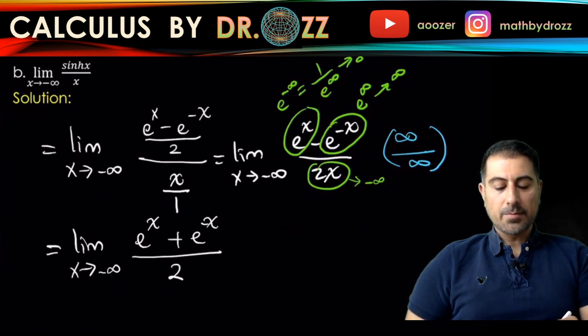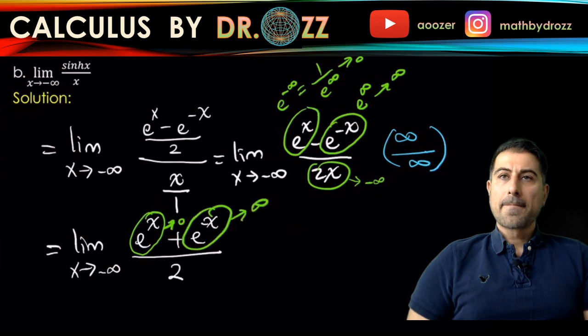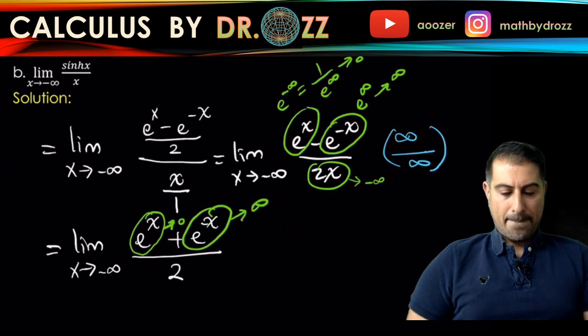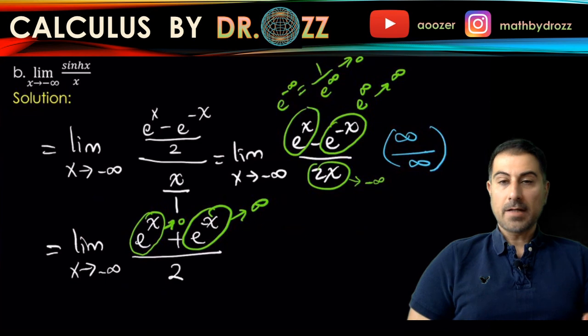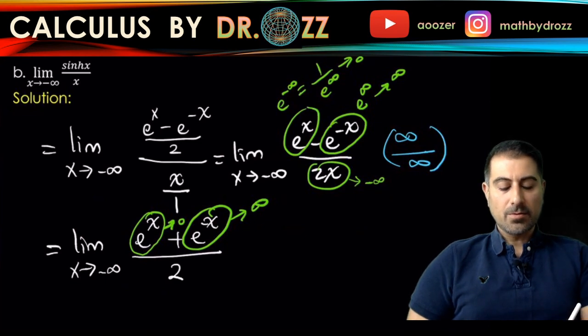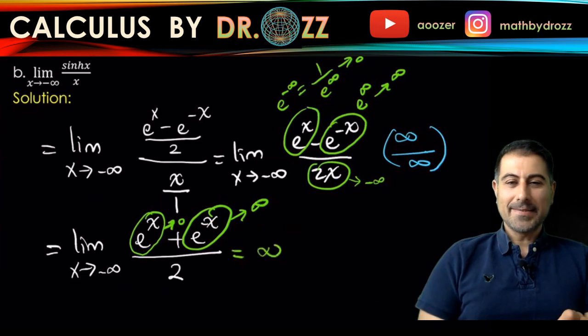By using the same logic that we had at the top over there, you have this term approaching zero and this term approaching infinity. So what happens is the top takes you to infinity.